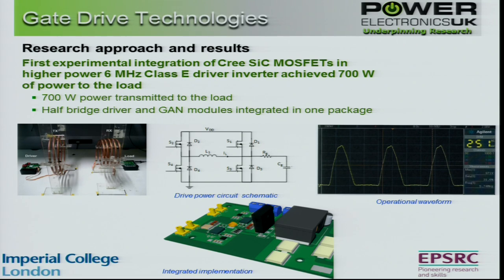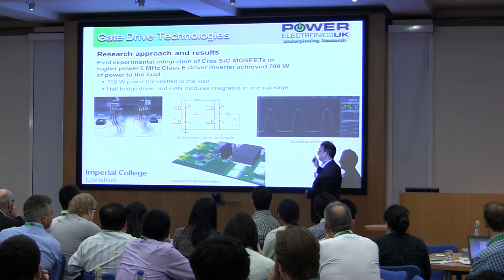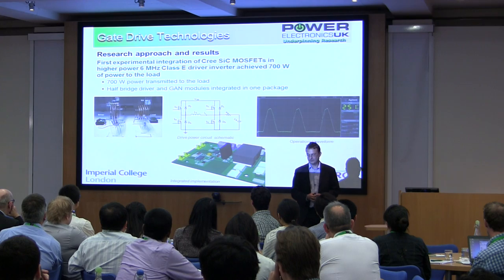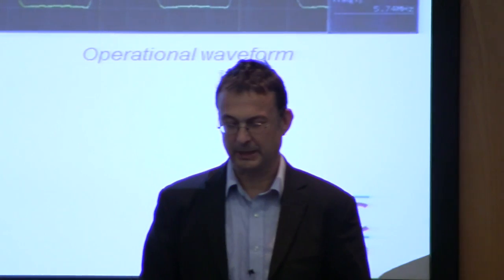This is taken forward to a wireless power transfer demonstrator — a 6 MHz class E inverter which has so far achieved 700 watts of wireless transmission. The circuit is shown doing its work, and that's going to be the integrated implementation of that particular demonstrator.